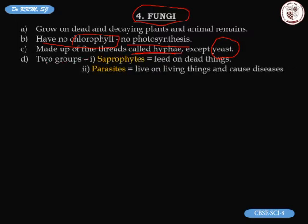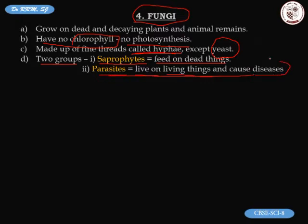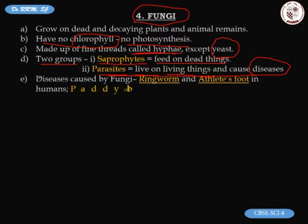Fungi can be placed in two groups. First are saprophytes — they love to grow on dead and decaying animal and plant remains because they feed on them. Second are parasites, which live on living organisms and cause diseases. Important diseases caused by fungi include ringworm and athlete's foot in humans.